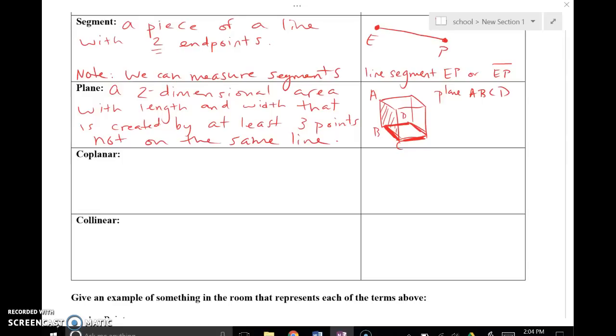So a plane again is two dimensions, length and width, and we're covering area. So we're thinking flat surface. I've drawn a three dimensional picture so that I can indicate one of the many planes that are actually present in this picture. So over on the left side, you can see ABCD, that whole side of this three dimensional figure, that's plane ABCD. Again, at least three points, not on the same line, length and width, flat surface.